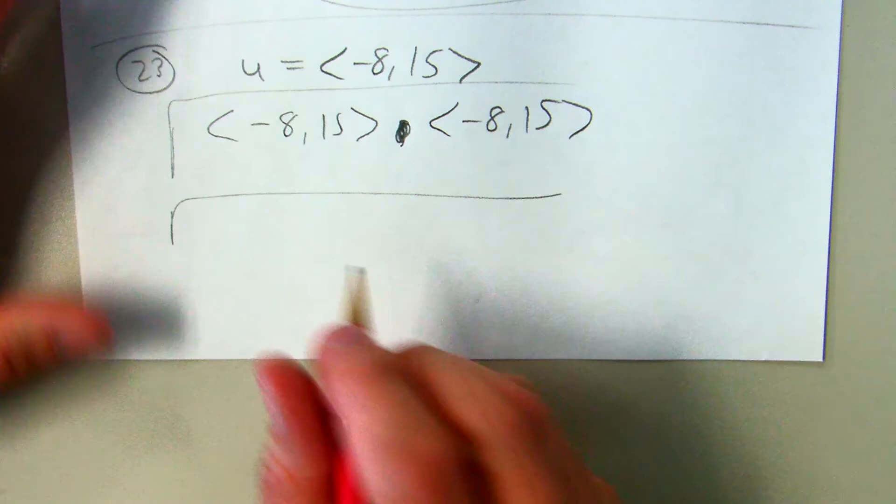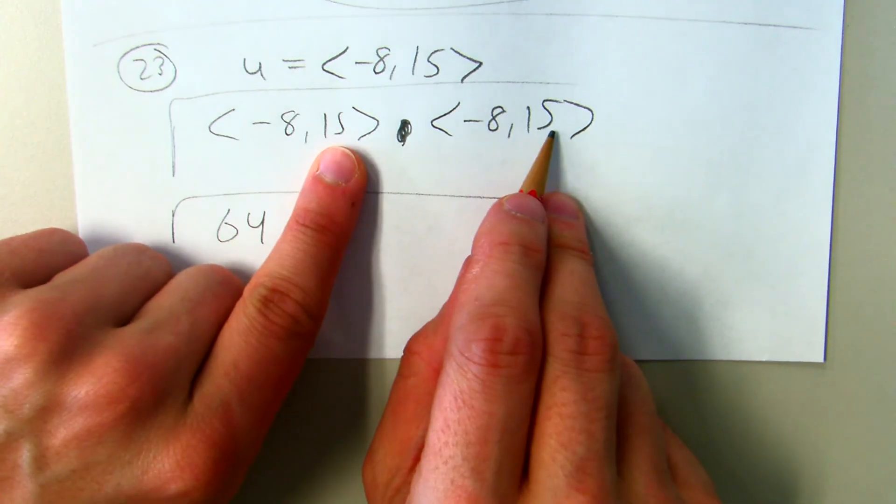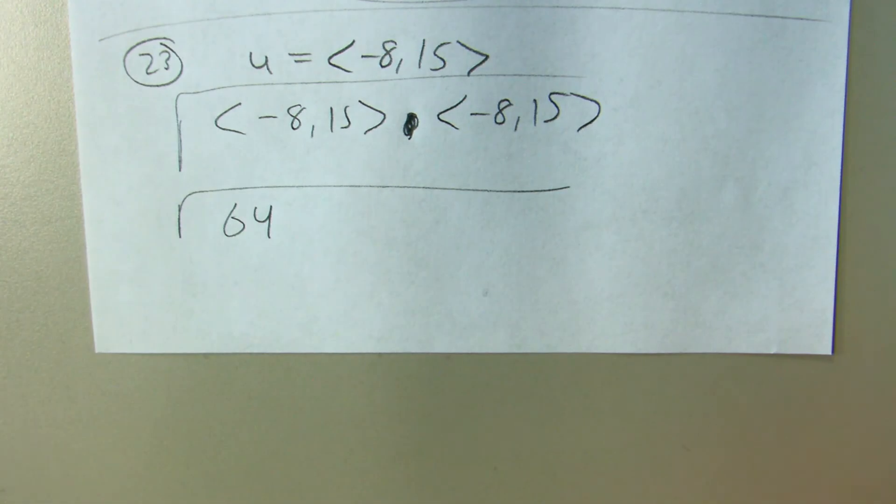So horizontal components multiply together, vertical components multiply together, and 15 times 15 is 225.